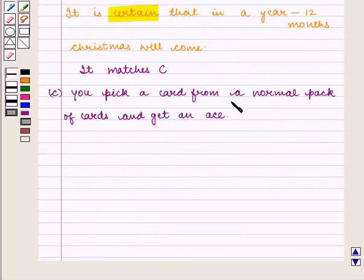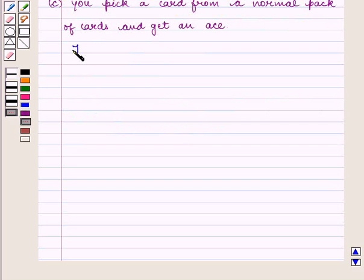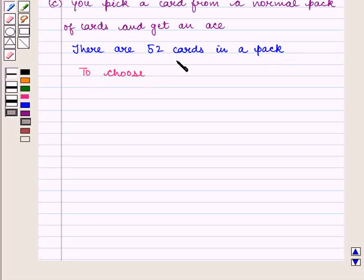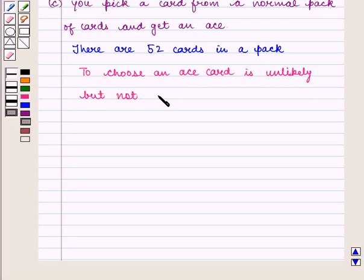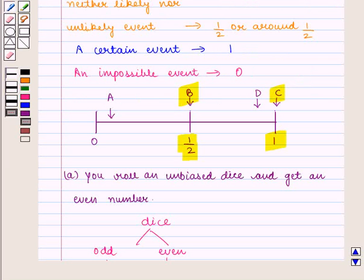Now we have another event which says you pick a card from a normal pack of cards and get an ace. We know that there are 52 cards in a pack, and to choose an ace card out of these 52 cards is unlikely but not impossible. So its probability is near to 0. Therefore, it matches A.